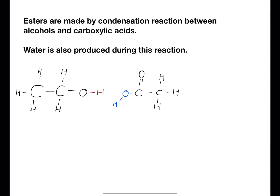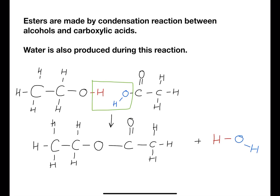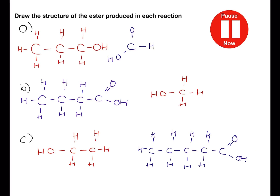Hi, welcome back to my channel. Today we're going to look at esters. Esters are made by condensation reactions between alcohols and carboxylic acids — water is also produced in this reaction. The hydrogen is removed from the alcohol and the hydroxyl group is removed from the carboxylic acid, producing water. The oxygen left on the alcohol then bonds to the carbon from the carboxylic acid, producing the ester link. Draw the structure of the ester produced in each of these reactions.